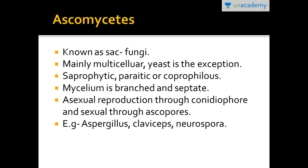Ascomycetes are also known as sac fungi. They are mainly multicellular, but yeast is unicellular. Their mode of nutrition is either saprophytic, parasitic, or coprophilous — meaning they grow on cow dung. Their mycelium is branched and septate. Asexual reproduction takes place through the formation of conidia, and sexual reproduction takes place through ascospores.